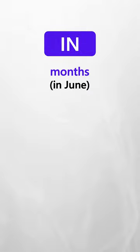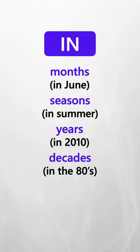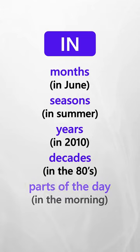We use 'in' for months (in June), for seasons (in summer), for years (in 2010), for decades (in the 80s), and for parts of the day (in the morning) — except we say 'at night.'